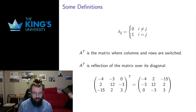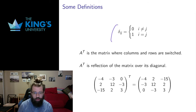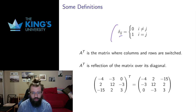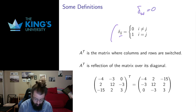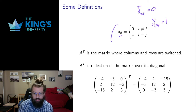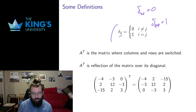I want to get into some more properties of orthogonal matrices, but I need to detour for a couple of definitions first. This is called the Kronecker delta — a lowercase Greek letter delta with two indices i and j. The Kronecker delta is zero if the indices are not the same, and one if the indices are the same. So delta_{2,4} evaluates to zero because two and four are different, but delta_{7,7} evaluates to one because seven and seven are the same. We use it quite frequently in mathematics.